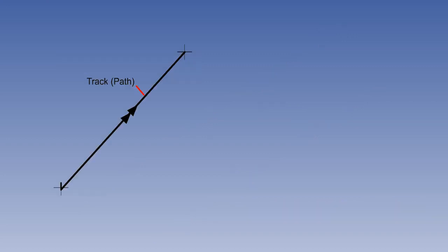However, the word track can have another meaning. As well as being the path of the aircraft over the ground, it can also mean the direction of that path. Strictly speaking, this should be called track angle, but most people refer to it as just track.